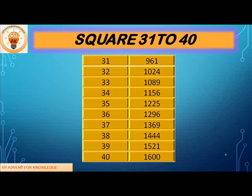37 square is 1369, 38 square is 1444, 39 square is 1521, 40 square is 1600.